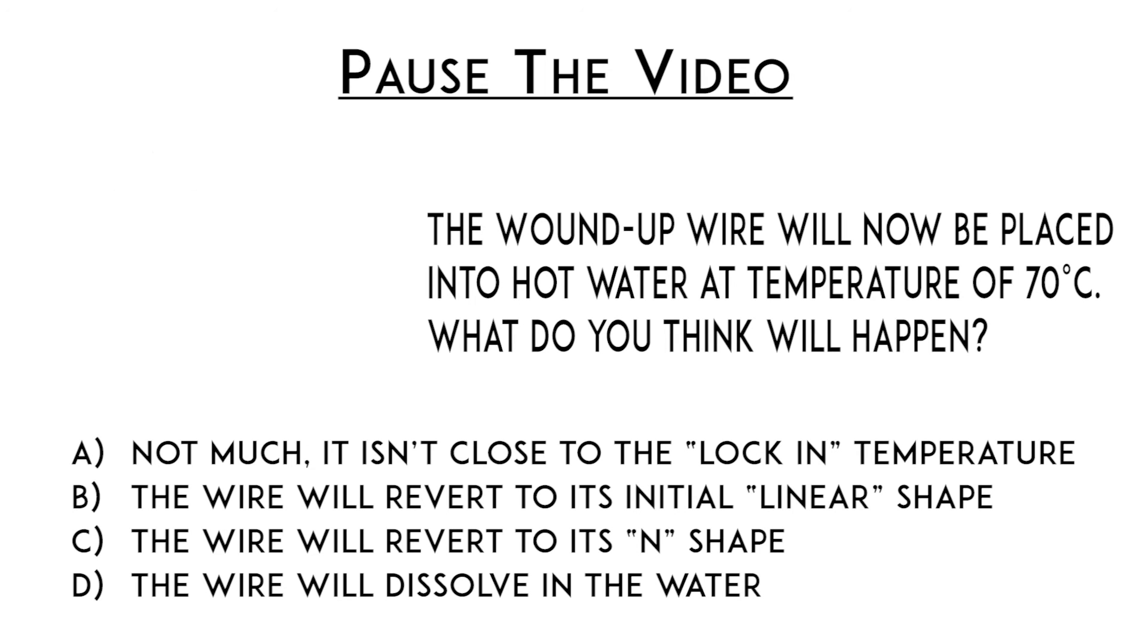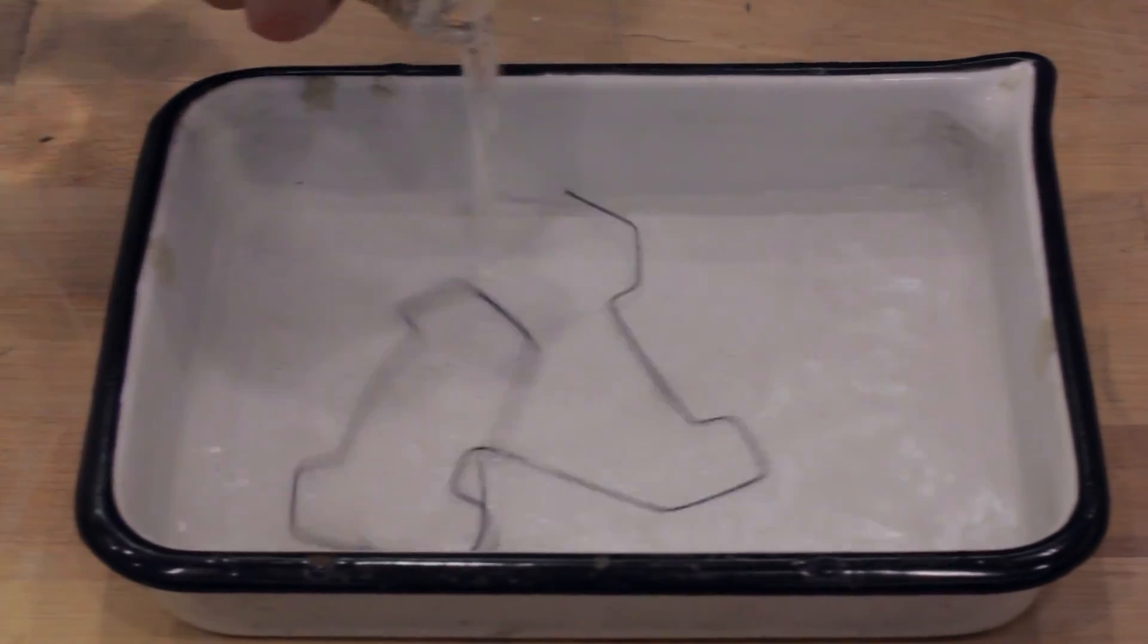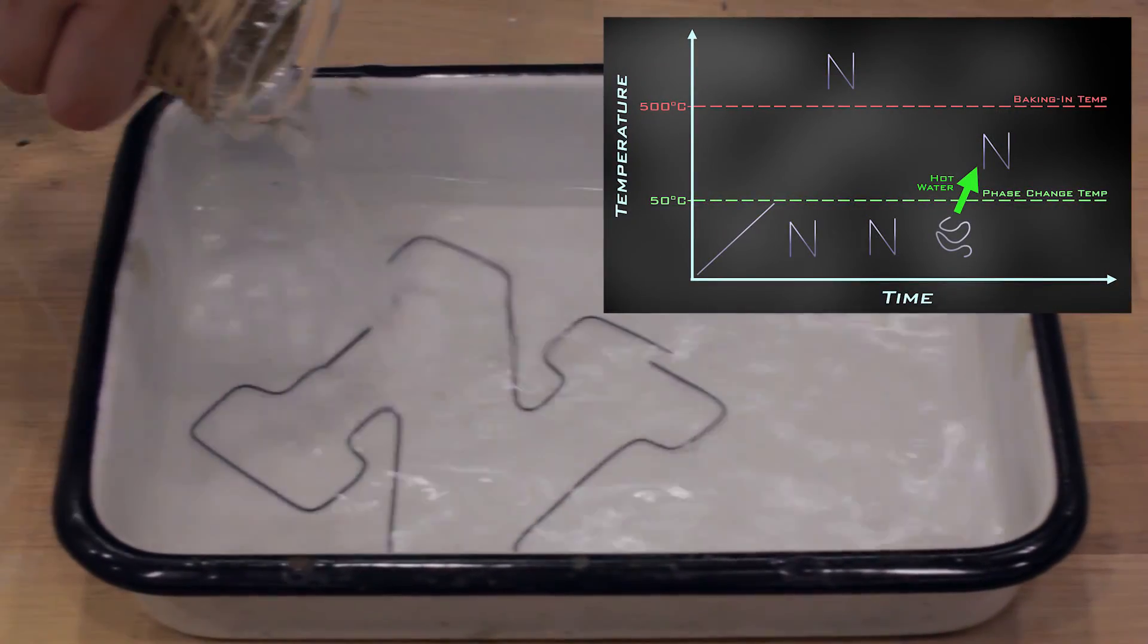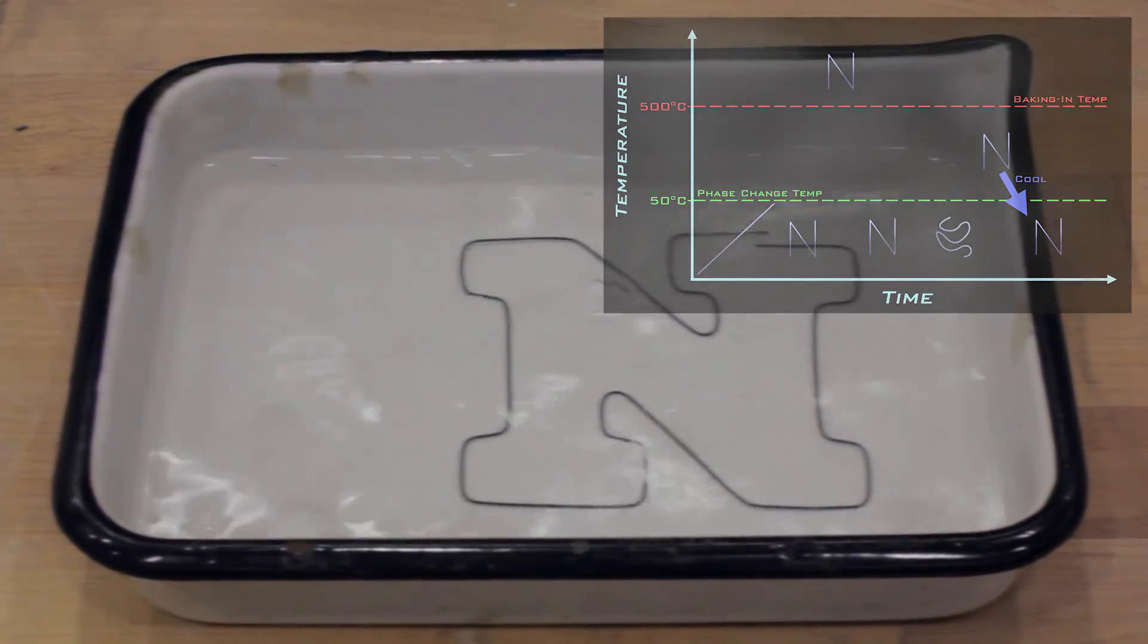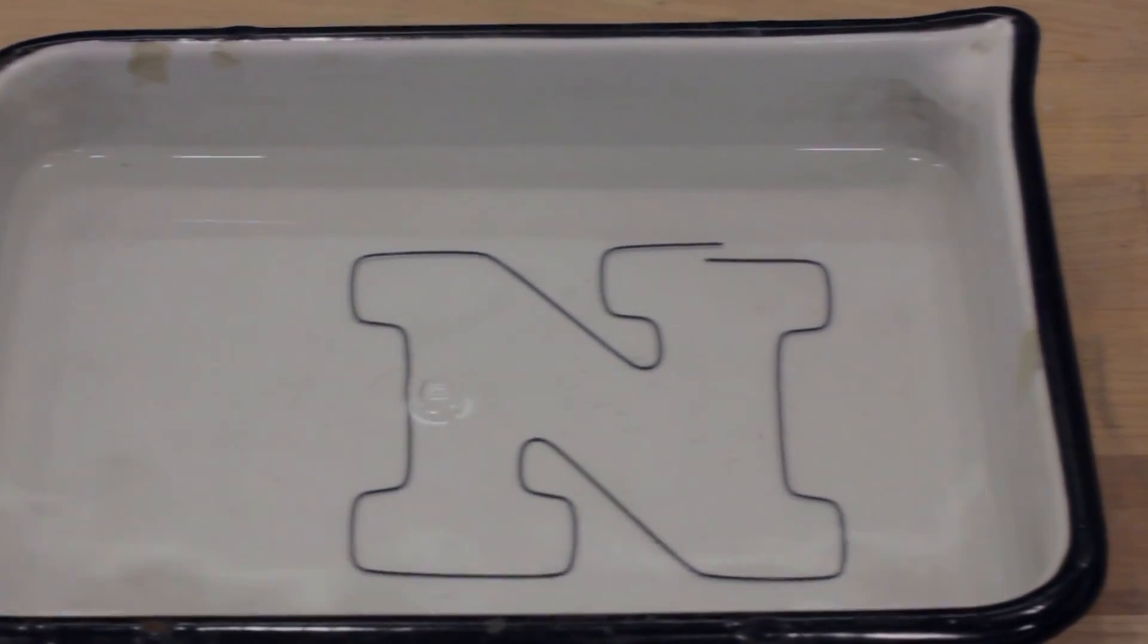We can return the wire to the baked in shape by raising its temperature into the high temperature region and instituting a phase change. Go Big Red!